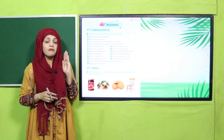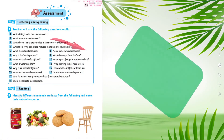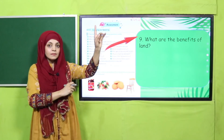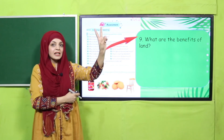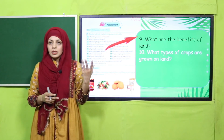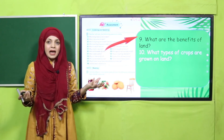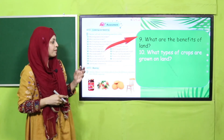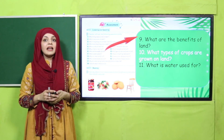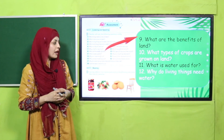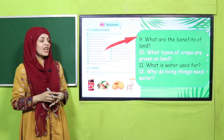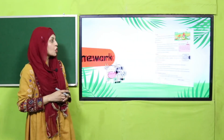Now the evaluation is on page number 94 with some listening and speaking questions. Question 9: What are the benefits of land? It gives us energy like coal and natural gas, and gives us food. Question 10: What types of crops are grown on land? Wheat, rice, and maize are some crops grown on land. Question 11: What is water used for? It is used for drinking, cleaning, washing, and electricity generation. Question 12: Why do living things need water? Living things need water to stay alive.